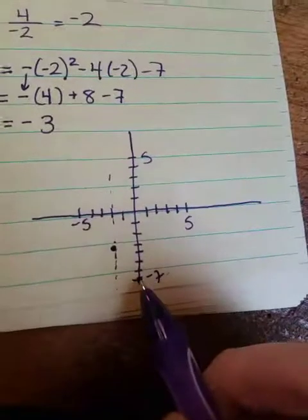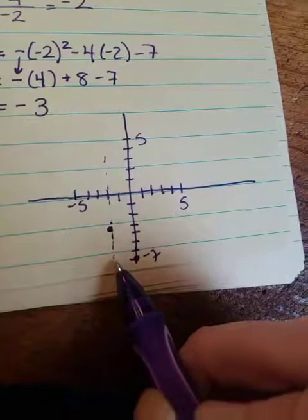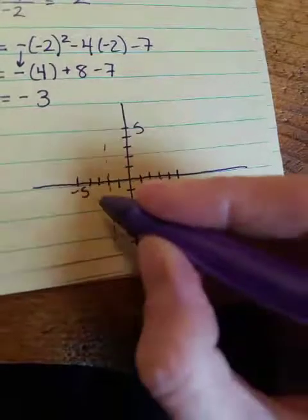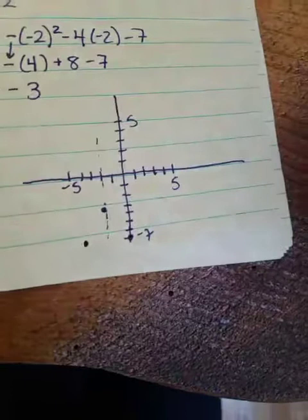So if the y-intercept is at 0, negative 7, that's two spots away from your axis of symmetry. So you have to go 2 to the other side to the left. So that's going to be at negative 4, negative 7.